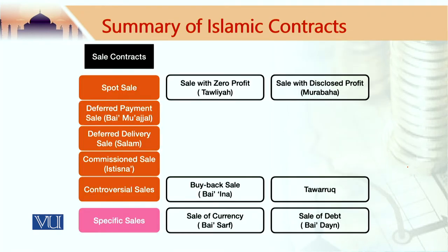When we look at sale contracts, the spot sale contract is the base level contract. It is a contract whereby one party sells something which is delivered now against a price which is received now. Hence we call it a spot sale contract, which is the base level contract in Islamic law and is actually the most preferred form of a sale contract. These spot sale contracts, or sales in general, could be without profit or with profit.